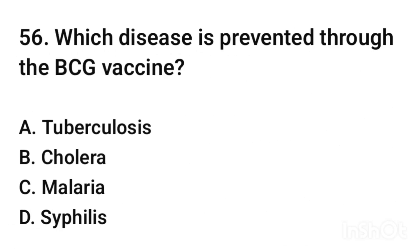Question number 56. Which disease is prevented through the BCG vaccine? The correct answer is option A: tuberculosis.